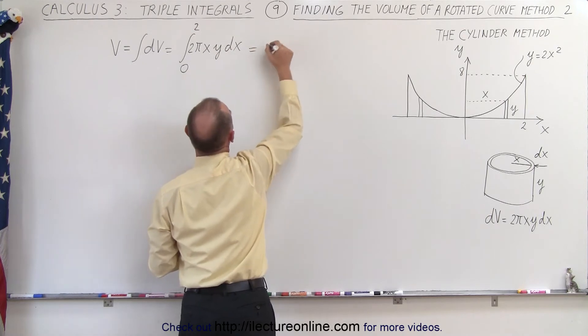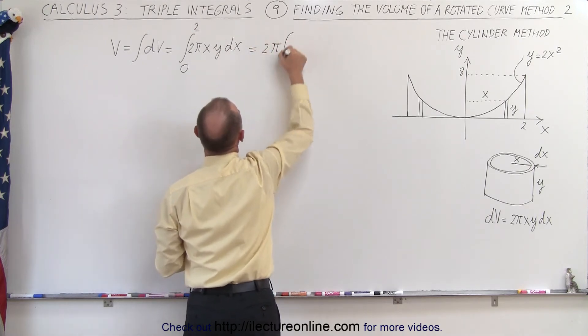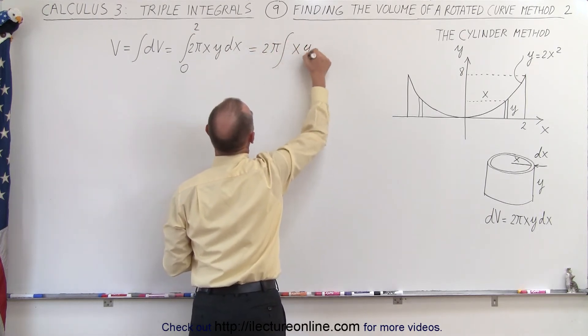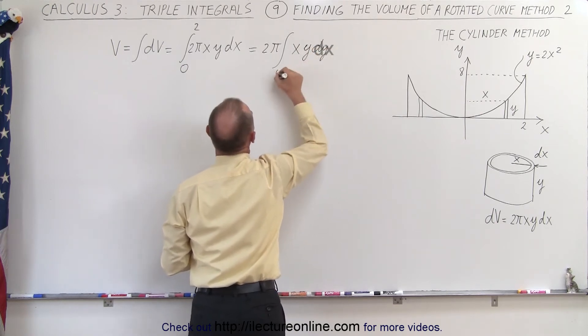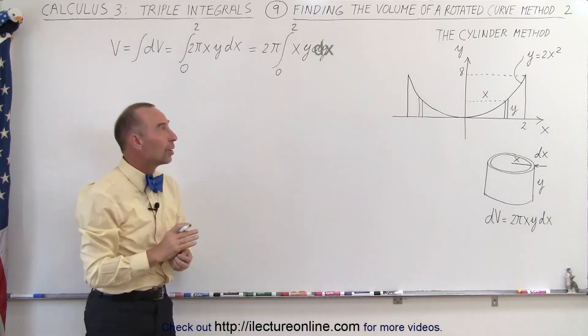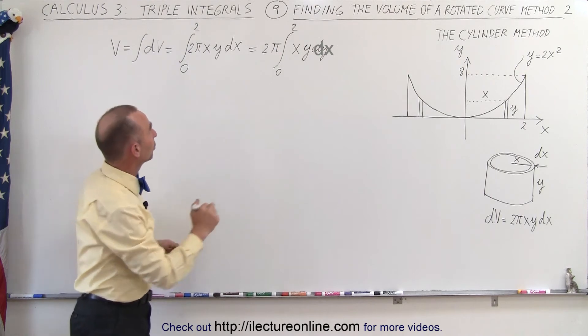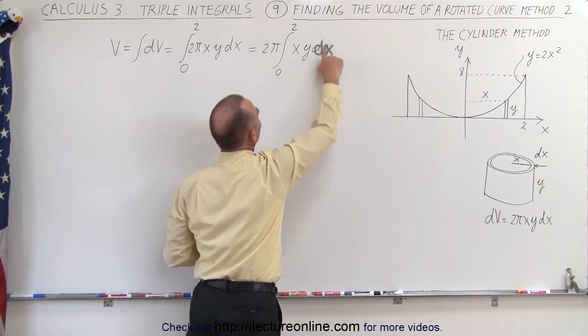And this can then be written as 2 pi times the integral of x times y dx from 0 to 2. Now, of course, since we're integrating over dx, I need a dx there.